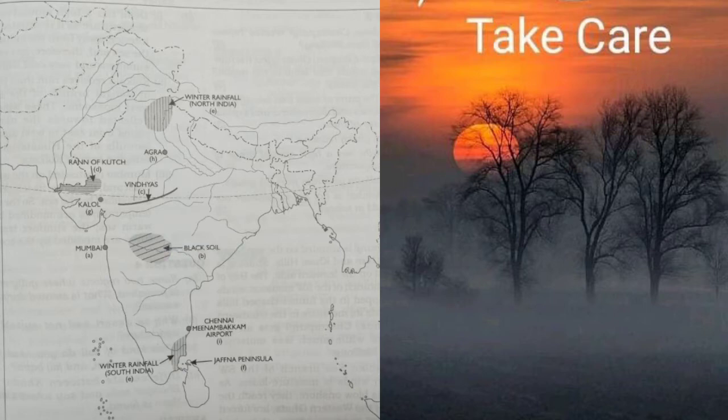Mark an area of South India with winter rainfall and an area of North India with winter rainfall. Mark the Kathiawar Peninsula once again — very important. Mark an oil field in Gujarat. Mark the city of the Taj Mahal — that is Agra.